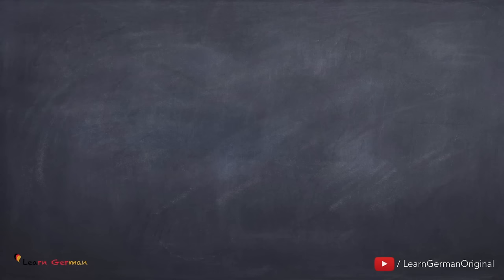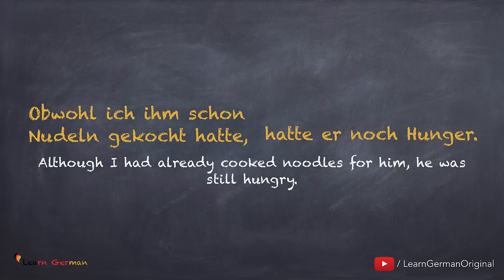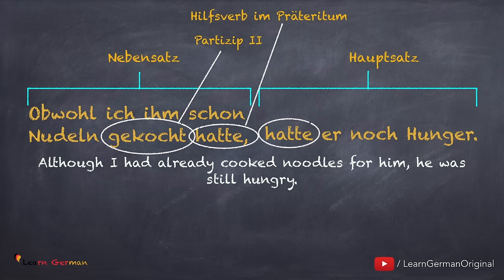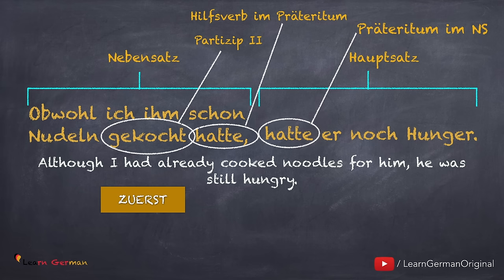Und hier ist das erste Beispiel: Obwohl ich ihm schon Nudeln gekocht hatte, hatte er noch Hunger. Obwohl ich ihm schon Nudeln gekocht hatte ist der Nebensatz; hatte er noch Hunger ist der Hauptsatz. Im Nebensatz steht das Verb im Plusquamperfekt — das Hilfsverb ist im Präteritum und es gibt ein Partizip 2. Im Hauptsatz steht das Verb im Präteritum. Hier sieht man auch, was zuerst passiert und was danach — das heißt, hier ist auch eine Vorzeitigkeit zu sehen. Was zuerst passiert, dieses Ereignis ist im Plusquamperfekt.